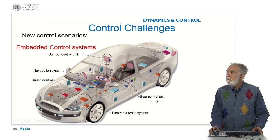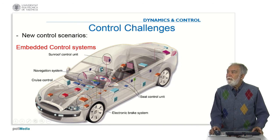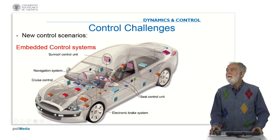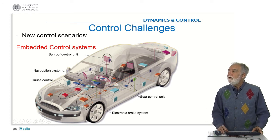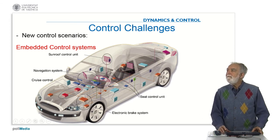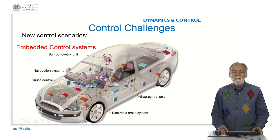A typical example of embedded control is the car, where we have many control units: seat control unit, electronic brake system, cruise control, navigation system, sunroof control unit. All these units operate locally but share data with other control units, and all of this is ultimately controlled by the central control unit or by the driver.